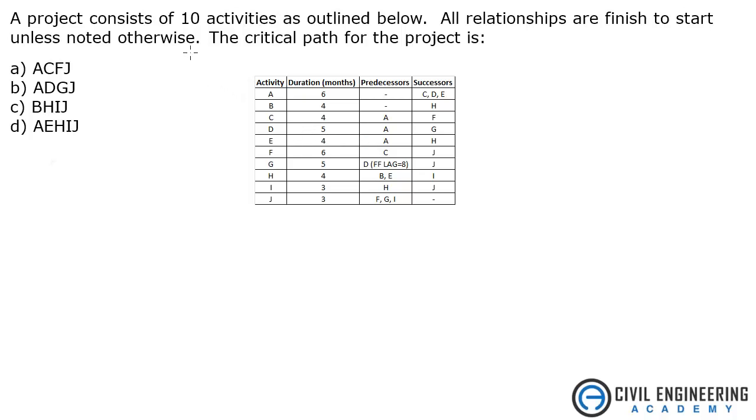Today we're solving a problem from construction. Problem states a project consists of 10 activities as outlined below. All relationships are finished to start unless noted otherwise. The critical path for the project is what? And so here's our activities, A through J, durations, predecessors, and successors.